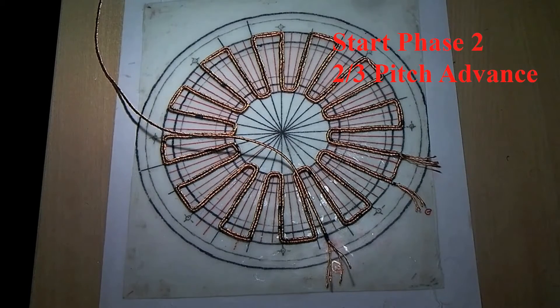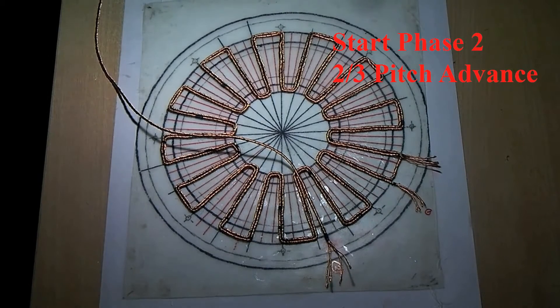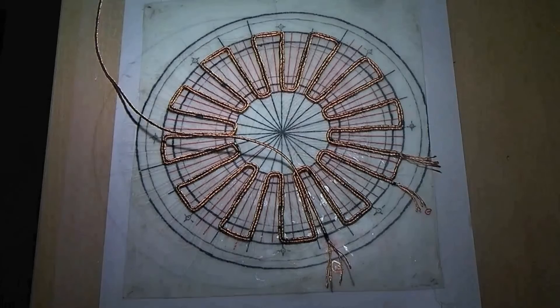Phase two is added electrically two-thirds of a pole pitch ahead. It overlaps phase one only outside the area to be covered by the magnets.